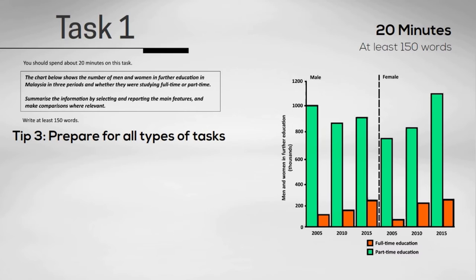Turning to tip number 4. Remember, you only need to describe the charts. You do not need to give reasons. So in the example from Malaysia, you do not need to explain why the number of part-time students is much more than full-time students, or why the number of female part-time students is increasing.